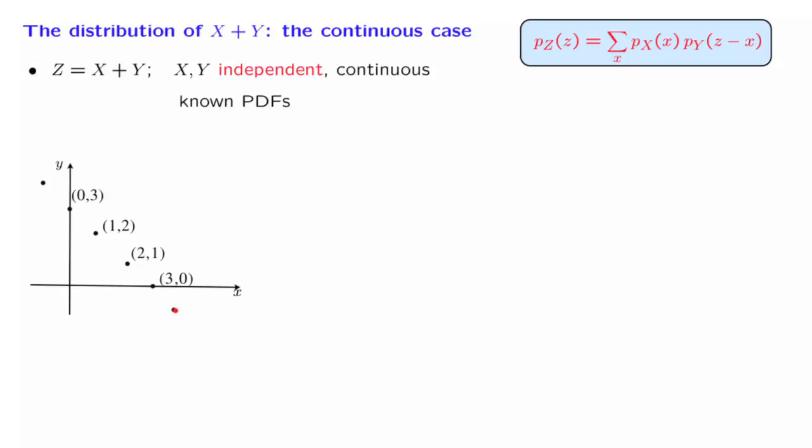In the continuous case, the different ways that the constant sum can be realized corresponds to a line. So this is a line in which X plus Y is equal to a constant. And we need to somehow add over all the possible ways that the sum can be obtained, add over all the points on this line.